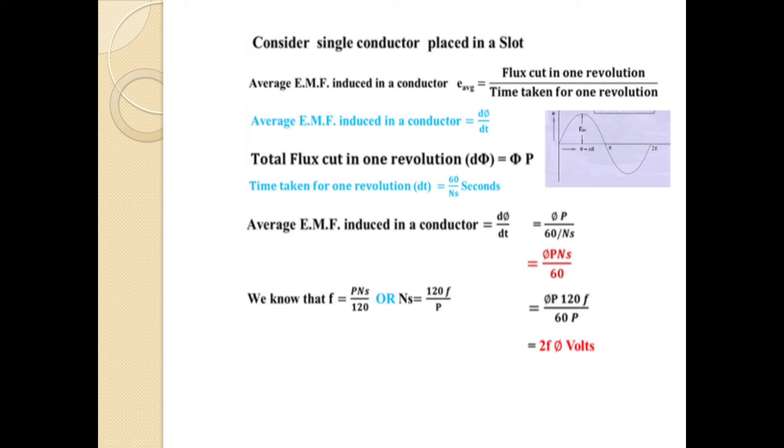Average EMF induced in a conductor equals total flux divided by time. We know that total flux is ΦP and time is 60 divided by Ns. So it becomes ΦP Ns divided by 60. We know that synchronous speed Ns equals 120F divided by P. Rearranging the formula, F equals P Ns divided by 120. Substituting the formula, the final value is 2FΦ volts.